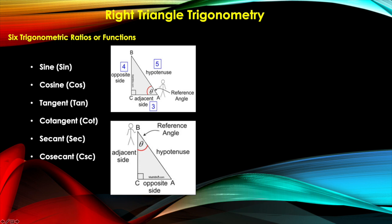Looking at the other diagram, the reference angle is now at the top, so the opposite and adjacent sides swap accordingly — what was the adjacent side before becomes the opposite side now, and vice versa. The hypotenuse remains the same, as it is always the longest side. Be sure to identify where the reference angle is before solving problems involving right triangle trigonometry.